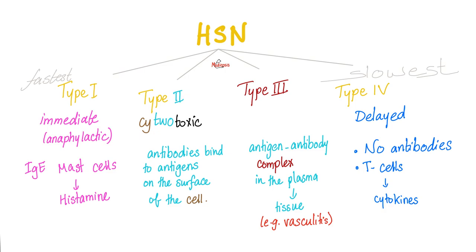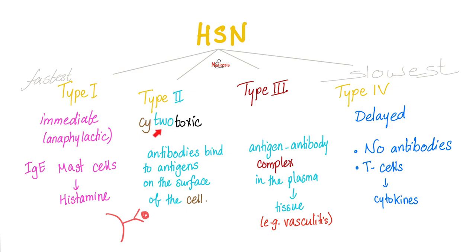Type 1: immediate anaphylactic, IgE, mast cells. They rupture and degranulate, releasing histamine, which can give you the symptoms of an anaphylactic shock. Type 2 is cytotoxic — antibodies are bound to antigens on the surface of the cell. That's why type 2 is cytotoxic.